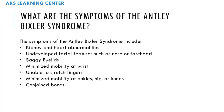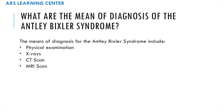What are the symptoms of Antley-Bixler syndrome? The symptoms include kidney and heart abnormalities, undeveloped facial features such as the nose or forehead, saggy eyelids, minimized mobility at the wrist, inability to stretch fingers, minimized mobility at the ankles, hips, or knees, and conjoined bones.